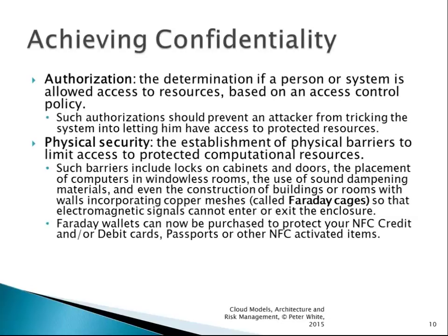Once you authenticate, we now know who this person is. We then look at authorization — determining if this identified person is allowed access to certain resources. This is based on an access control policy to prevent anybody from tricking the system into letting them have access to resources they should not. We also use physical security to establish physical barriers — locks on cabinets and doors, computers in data centers, windowless rooms with thick walls, sound dampening materials, and even Faraday cages.